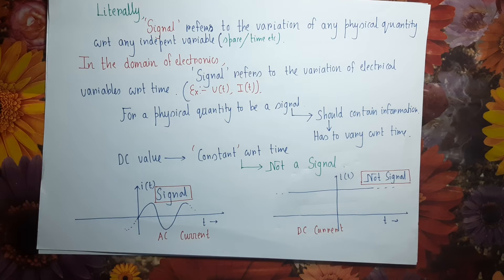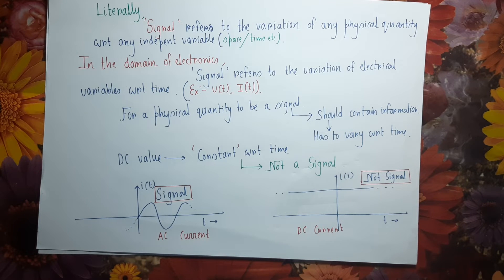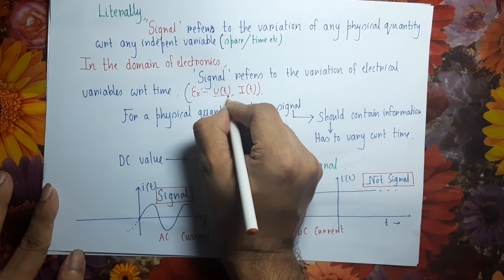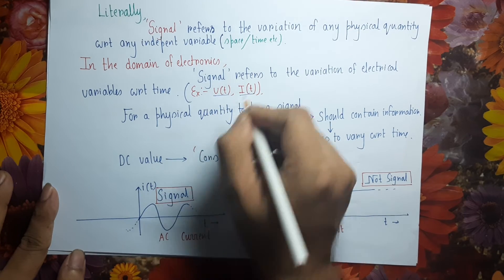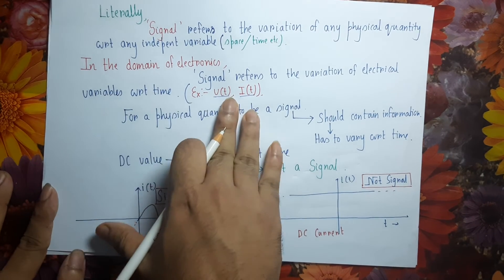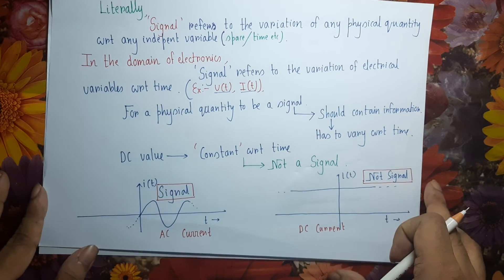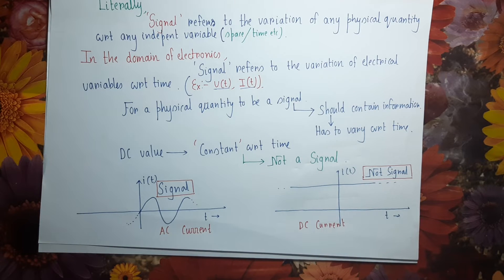However, in the domain of electronics and electrical engineering, a signal is defined as the variation of electrical variables with respect to time. Electrical variables are those required to define a particular electric circuit, such as voltage and current. So a voltage V varying with respect to time T, or a current I varying with respect to time T, are signals in the domain of electronics.